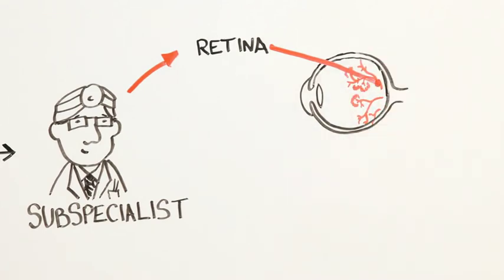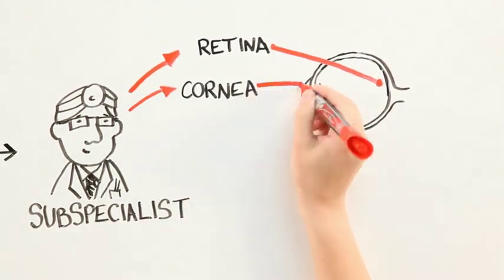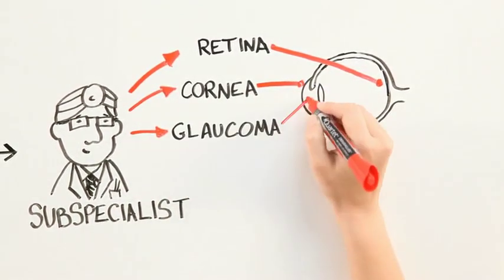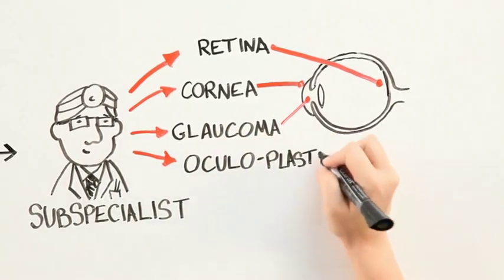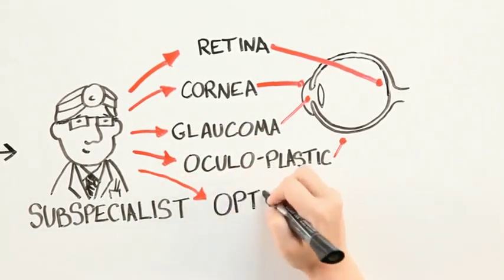Other MDs can subspecialize in other parts of the eye. So there are cornea specialists, glaucoma specialists, oculoplastic specialists, there is even a specialist for the optic nerve.